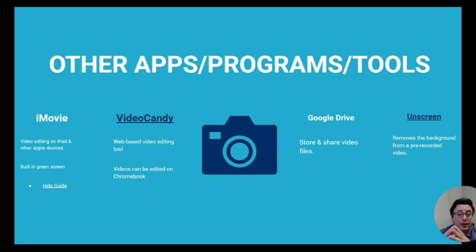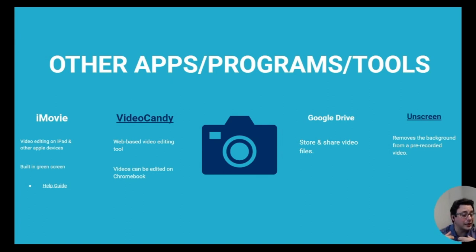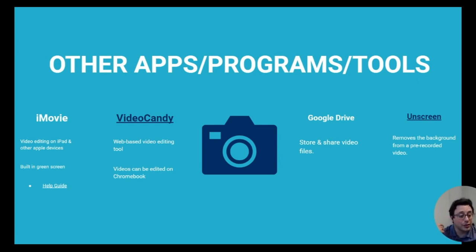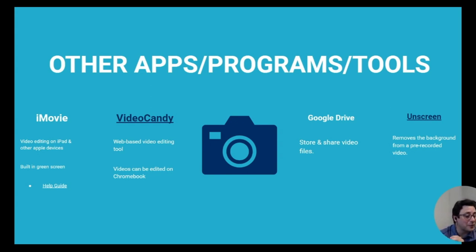Another option to edit video is unscreen.com — what it does is remove the background from a pre-recorded video. So if you already have a video and want to add a backdrop of a scene but didn't record it using a green screen, Unscreen allows you to take that pre-existing video, removes the background behind the person or object in the forefront, and then allows you to customize whatever background you'd like to put behind what is being recorded.